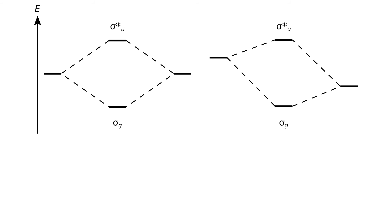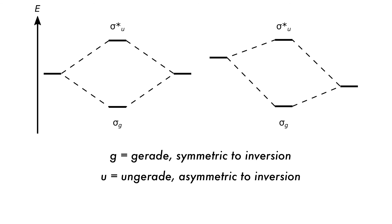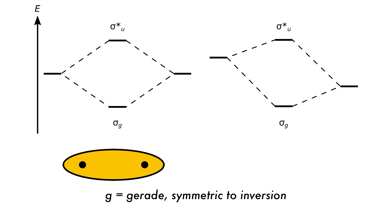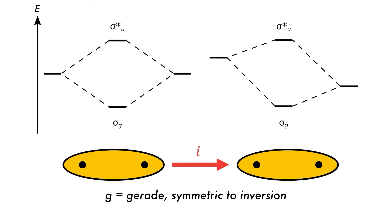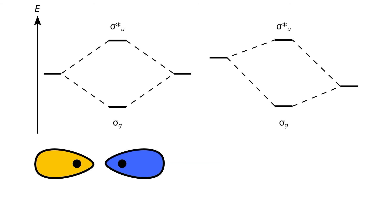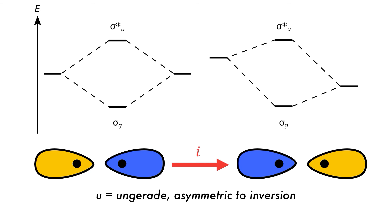Molecular orbitals can also be labeled with a subscript g or u, meaning gerade or ungerade. Gerade molecular orbitals are symmetric to inversion, and ungerade are asymmetric to inversion. The bonding sigma molecular orbital formed from 1s orbitals is ungerade, meaning that it does change when inverted — it is asymmetric to inversion.